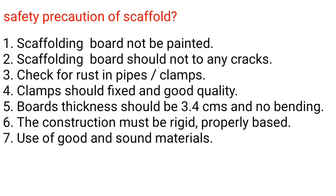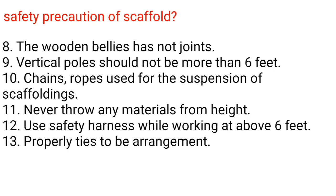Safety precautions for scaffolding: 1. Scaffolding boards should not be painted. 2. Scaffolding boards should not have any cracks. 3. Check for rust in pipes and clamps. 4. Clamps should be fixed and of good quality. 5. Board thickness should be 3.4 cm and no bending. 6. The construction must be rigid and properly based. 7. Use good and sound materials. 8. Wooden members should have no joints. 9. Vertical poles should not be more than 6 feet apart. 10. Chains and ropes used for the suspension of scaffolding. 11. Never throw any materials from height. 12. Use safety harness while working above 6 feet. 13. Proper ties to be arranged.